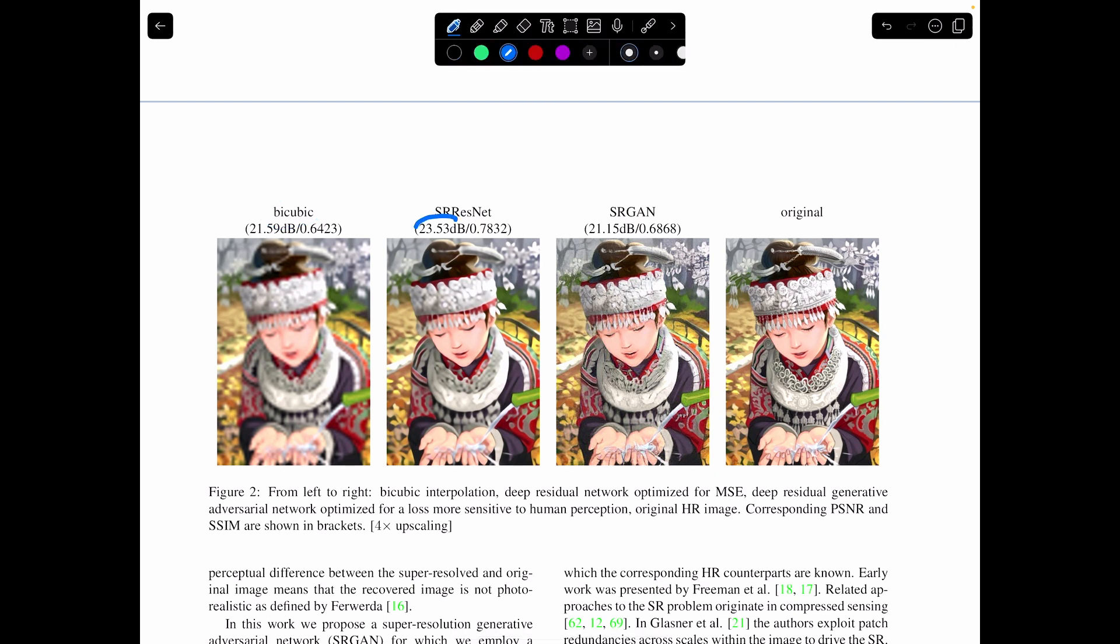But this kind of has a problem, which is that images with a high peak signal-to-noise ratio, such as this image right here with a PSNR of about 23.5, is clearly less visually appealing than this image, which has a lower peak signal-to-noise ratio. So what that tells us is to make a good image, what you often need isn't peak signal-to-noise ratio, but something else.